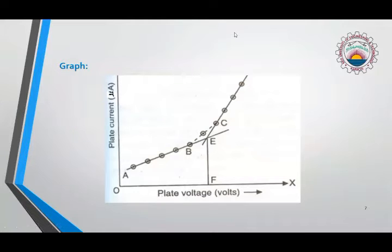Here is the graph of this experiment. The graph is split in two parts. Initially as we know the plate current increases very slowly with increase in the plate voltage. So the values before 8 or 8.5 will be plotted like this, a straight line from A to B.